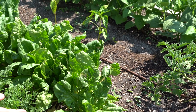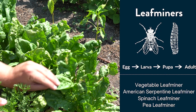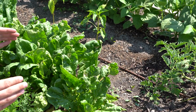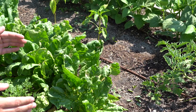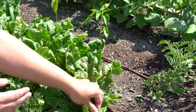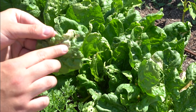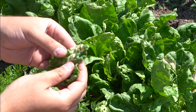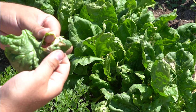Another common pest to look out for is the leaf miner. The adult is a fly that lays tiny white eggs on the undersides of different host crops like spinach, chard, or beet greens. Once those eggs hatch, the larvae will burrow into the leaves creating mines. The little larvae or maggots feed in between the leaf layers and can cause extensive damage to our greens.